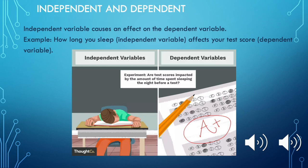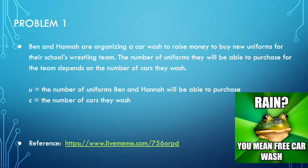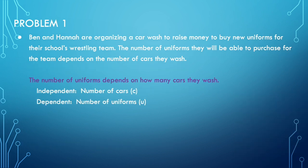Let's work through a bunch of examples to make this clearer. First one: Ben and Hannah are organizing a car wash to raise money to buy new uniforms for their school's wrestling team. The number of uniforms they'll be able to purchase depends on the number of cars they wash. So U is the number of uniforms and C is the number of cars. The independent variable is the number of cars and the dependent variable is the number of uniforms.